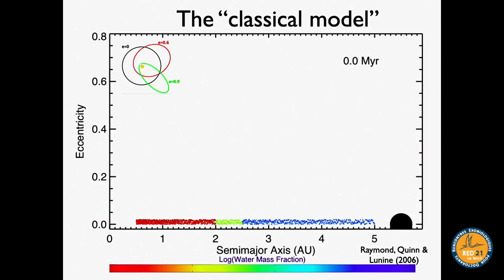Here's an animation of the classical model. The y-axis is orbital eccentricity, the x-axis is orbital distance. Each dot is a small growing planetary embryo, and its color represents water content — red is dry, dark blue has about 5% water. Color changes indicate mixing between objects from different zones. At time zero Jupiter is assumed already formed; this time zero corresponds to when the gas disk went away, roughly 3–5 million years after CAIs.